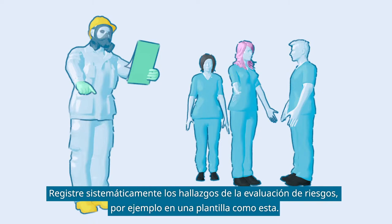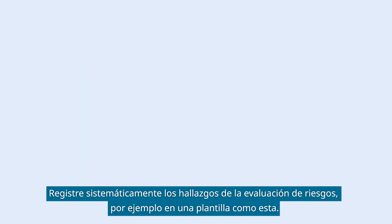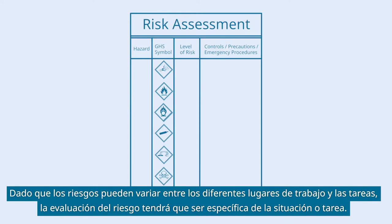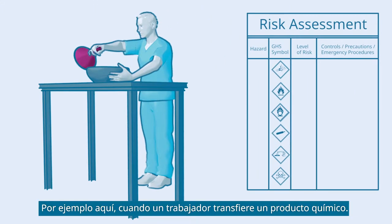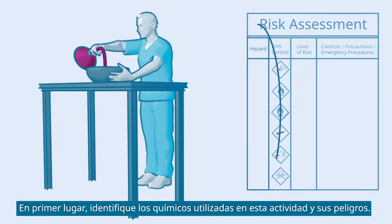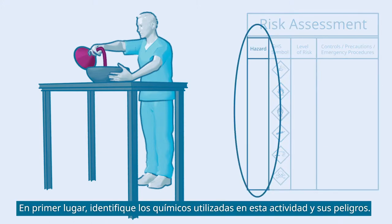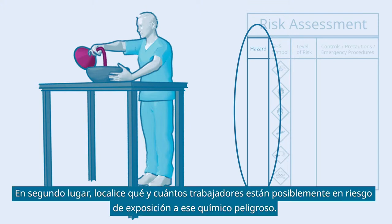Systematically record the findings of the risk assessment, for example in a template like this one. Since the risks may vary between workplaces and tasks, the risk assessment will have to be situation or task specific. For example, when a worker transfers a chemical. First, identify the chemical substances used in this activity and their hazards.